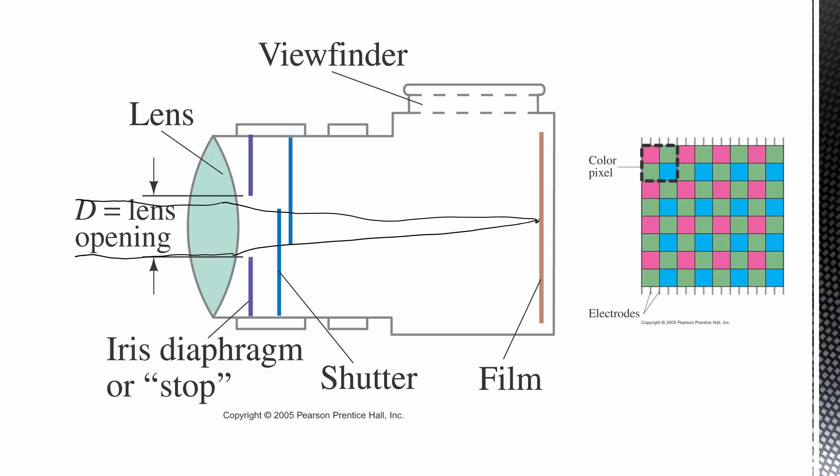Okay, we have a couple of other main parts to a camera. One of them is called the iris diaphragm, or sometimes known as the stop, which is this thing here. And it essentially limits how much light gets through, and we'll talk about that in more detail. But that helps with the exposure, for one thing, and also with something else known as depth of field.